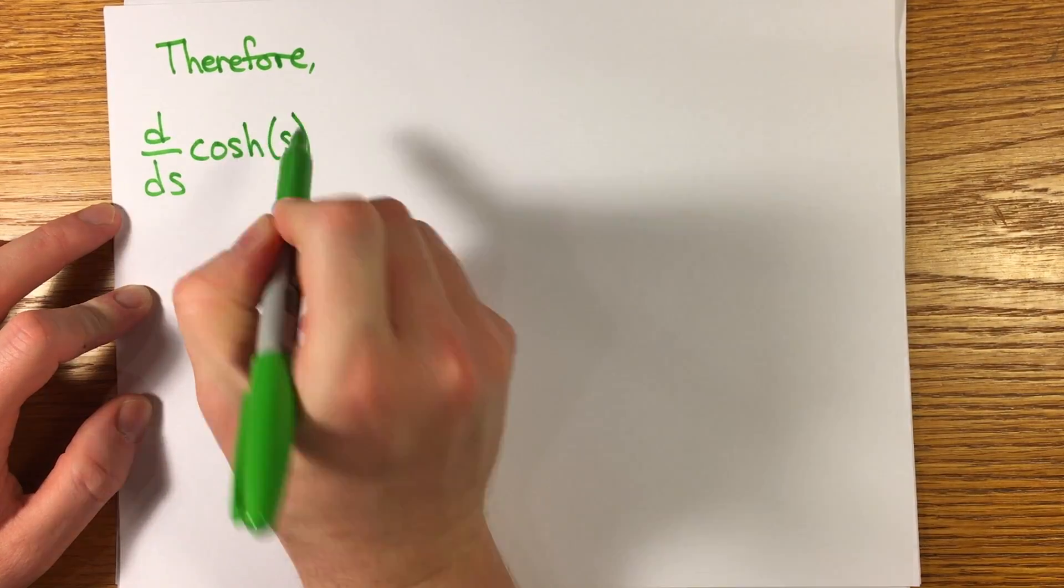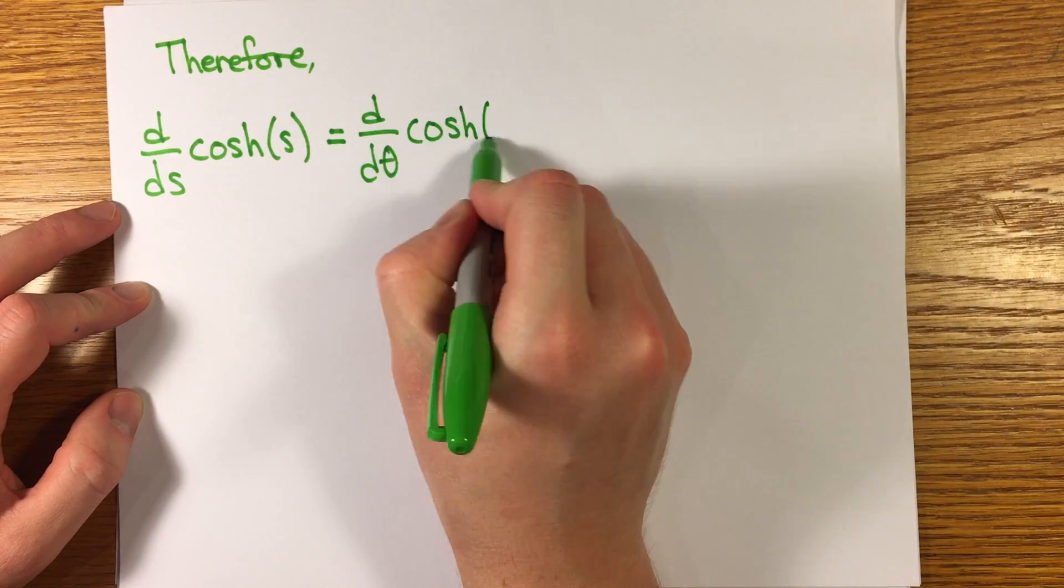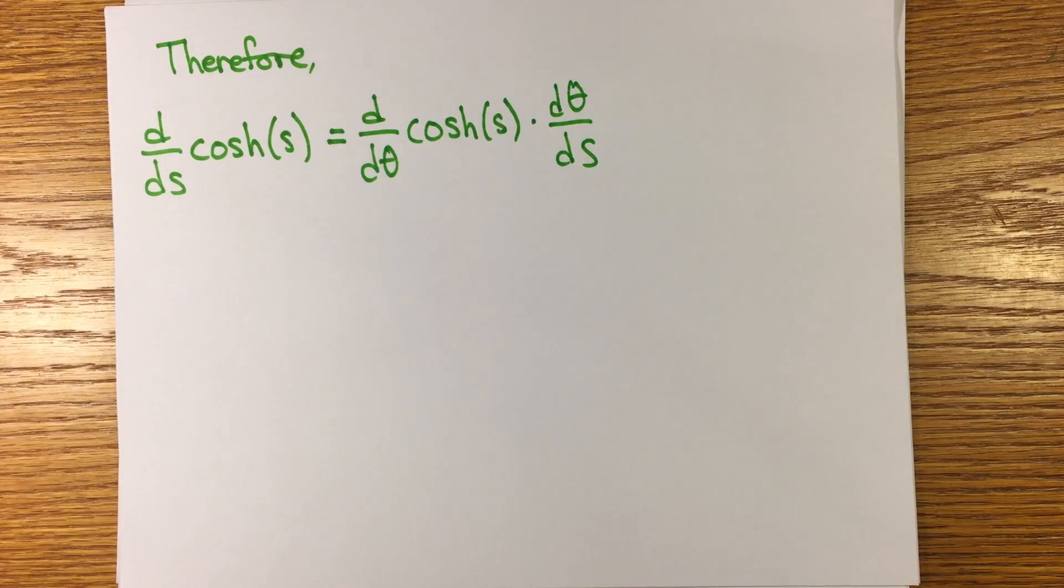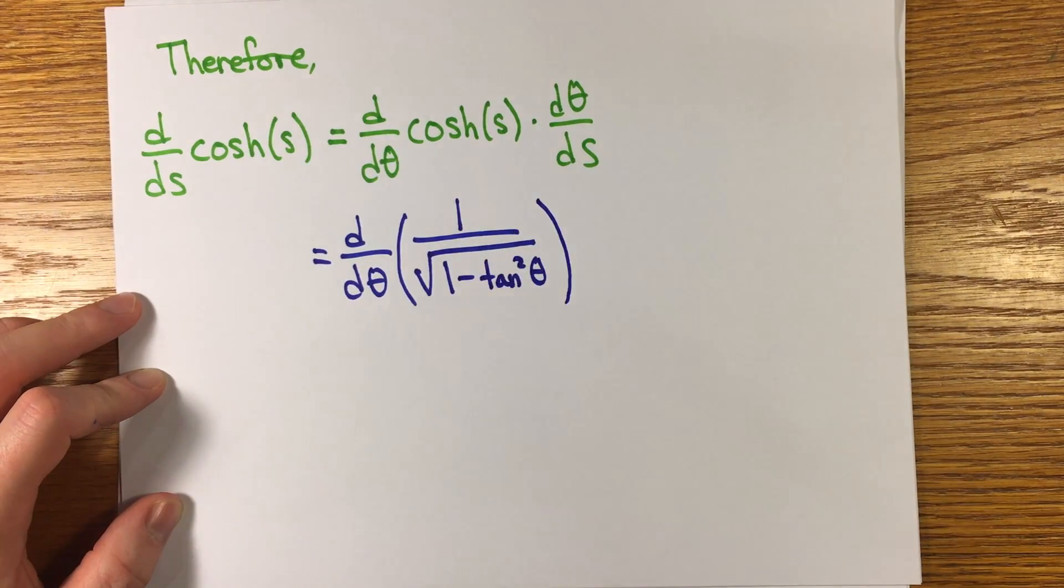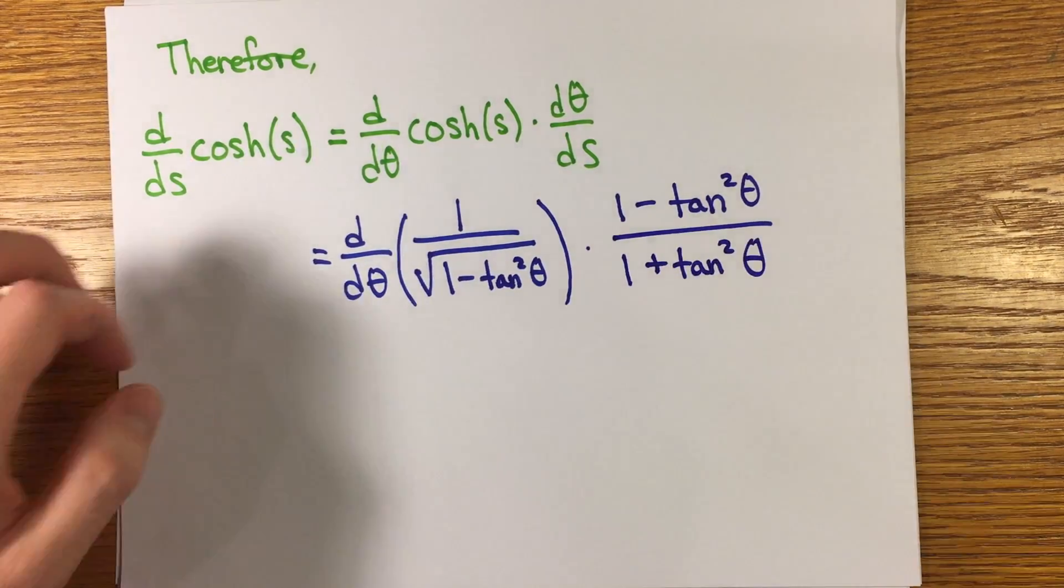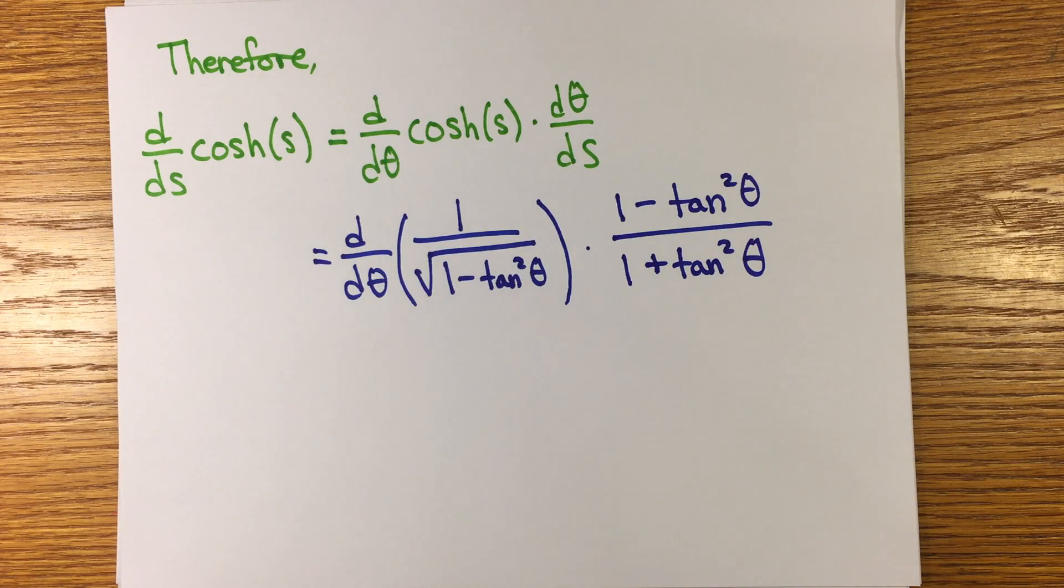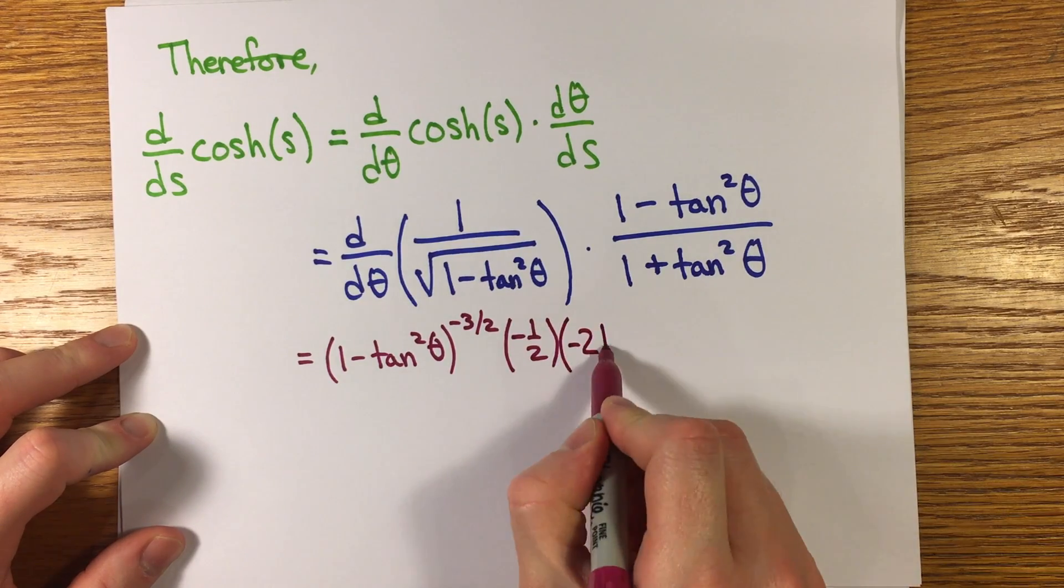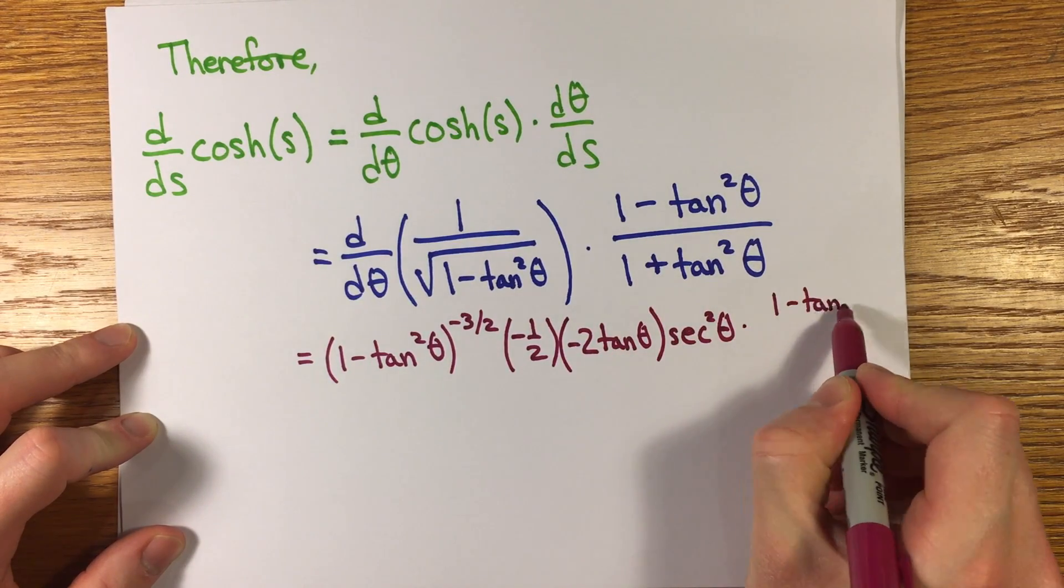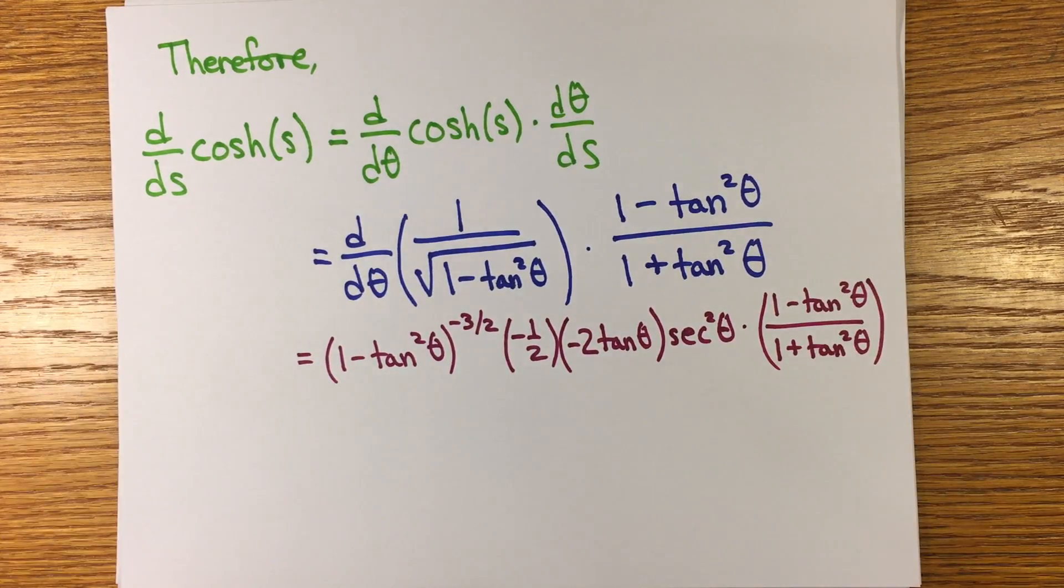Now we have enough to take the derivative by the chain rule d ds of cosh s equals d d theta cosh s times d theta ds, which equals d d theta of square root of one over one minus tanh squared theta times one minus tanh squared theta over one plus tanh squared theta, since the inverse function theorem says that d theta ds equals one over ds d theta.